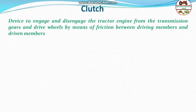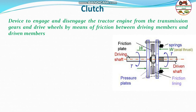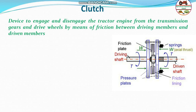A clutch is a device to engage and disengage the tractor engine from the transmission gears and drive wheels by means of friction between driving members and driven members. For example, there is a system where power is transmitted from a driving shaft to the driven shaft. In between there is a friction plate having a friction lining which, by means of friction, transmits the power or torque from the driving shaft to the driven shaft. Springs or axial thrust help to engage the friction plate so that power is transmitted through friction.